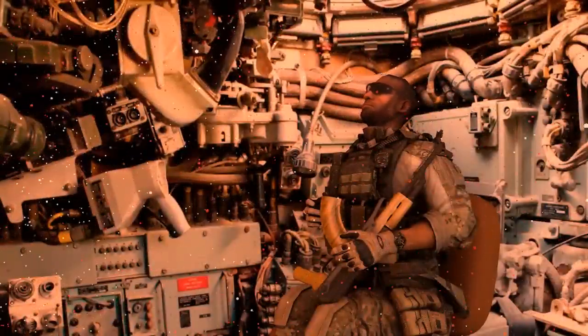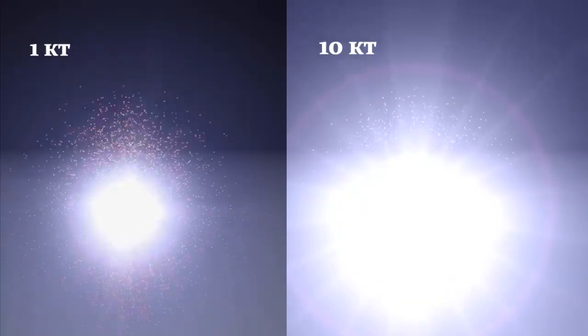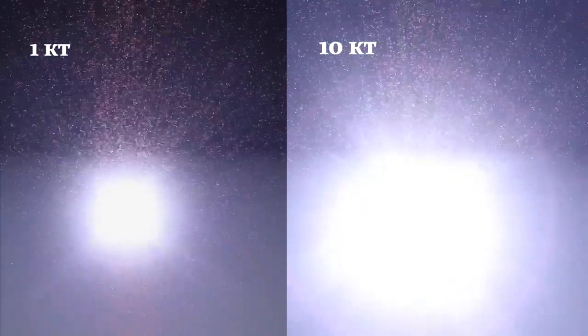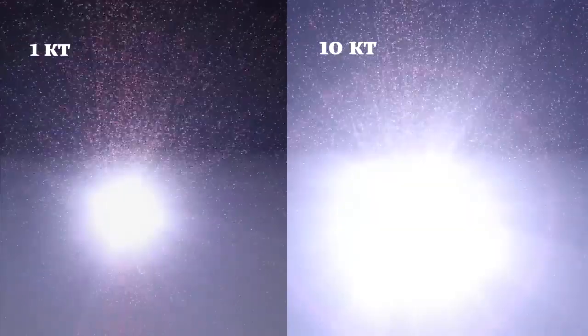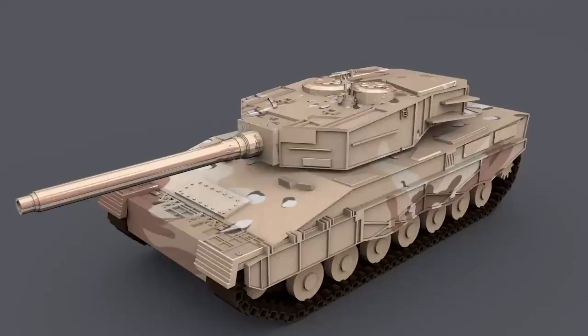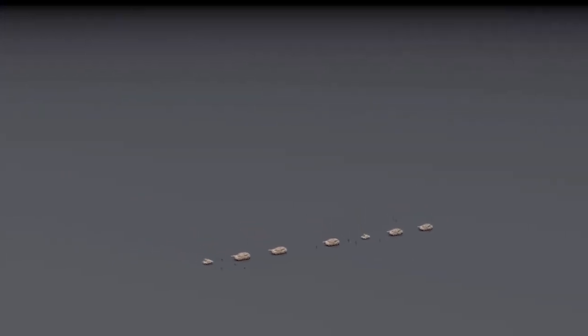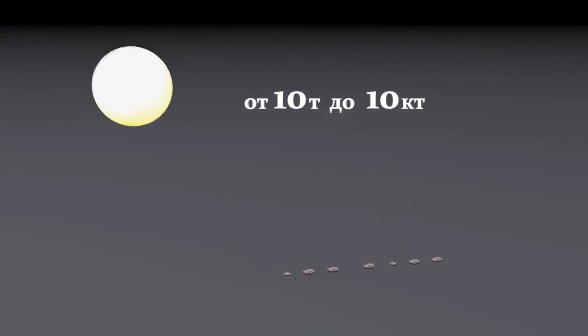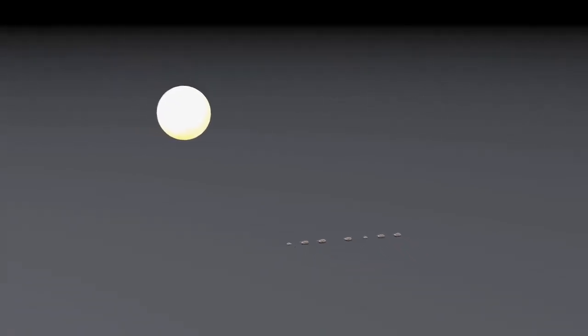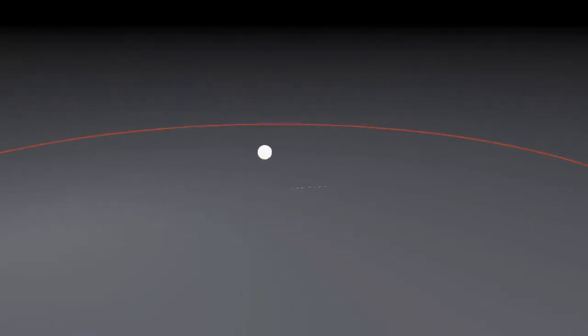Approximately 10^24 neutrons are released for each kiloton of nuclear charge power. When a neutron charge of the same power explodes, the number of neutrons released is about 10 times greater, and their flux density is correspondingly higher. It follows from this that the explosion of a neutron charge, unlike a nuclear one, creates a denser and more intense neutron flux, and its penetrating power is much higher. A kiloton neutron charge generates the same penetrating radiation as a conventional 10-kiloton nuclear charge.